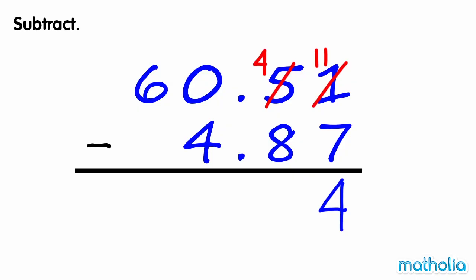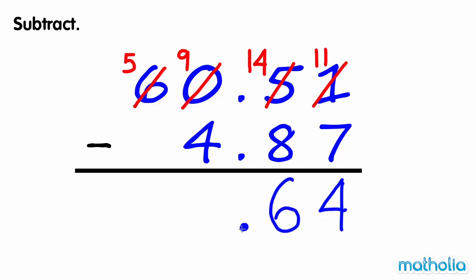Subtract the tenths. We cannot subtract 8 tenths from 4 tenths, so we regroup 1 ten into 9 ones and 10 tenths. We now have 14 tenths. 14 tenths minus 8 tenths equals 6 tenths. Write the decimal point.